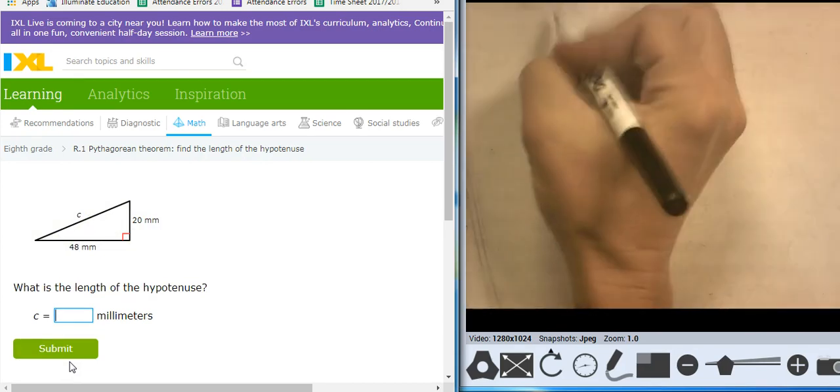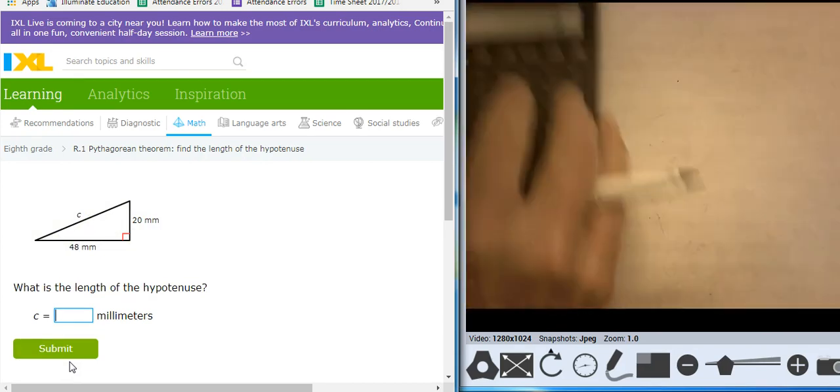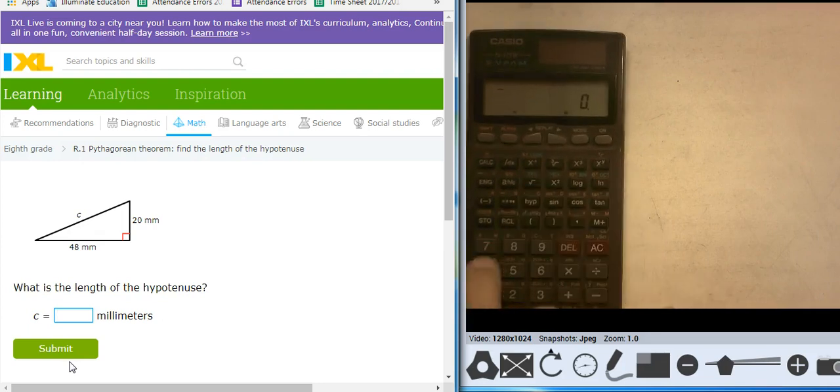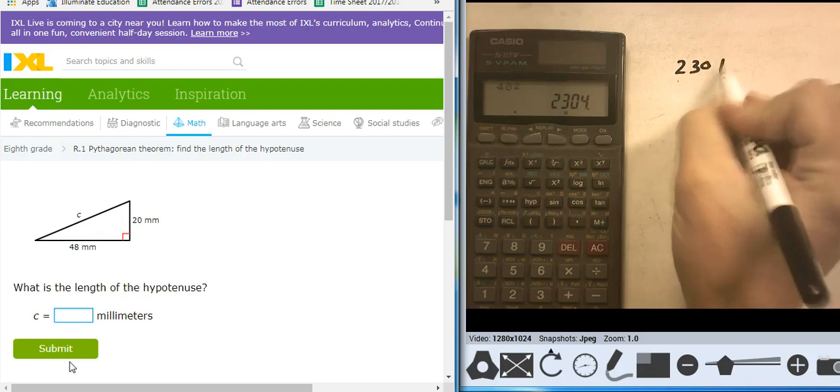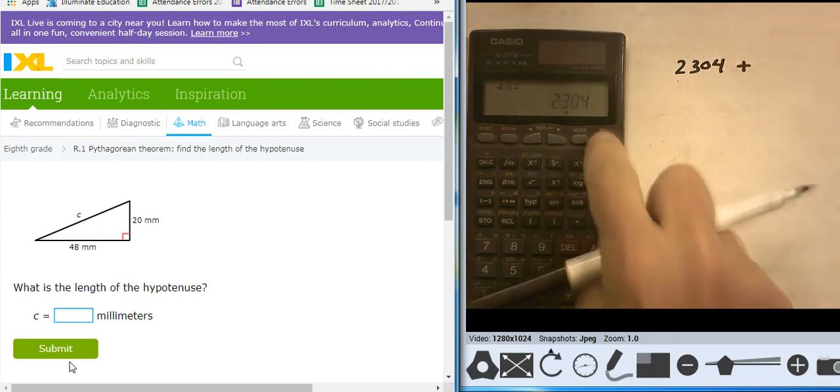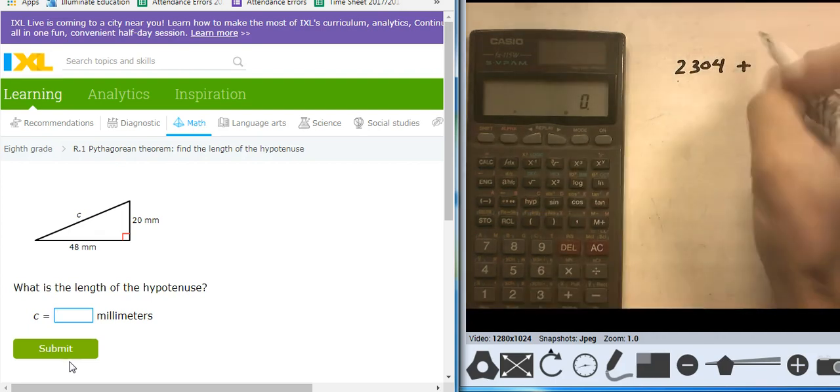48 squared. Let's see. I'll show you what I'm doing on the calculator here, too. So, 48 squared. 2,304. Plus 20 squared is 400.